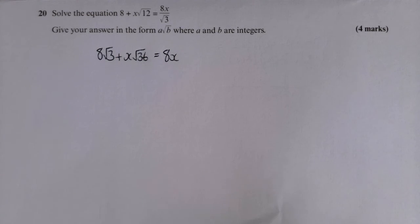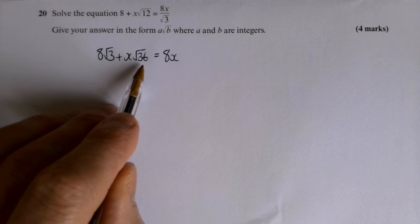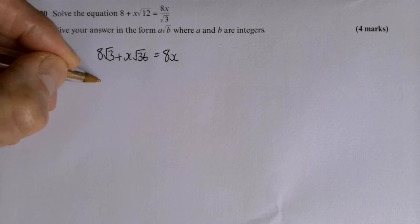So I haven't rationalised, that's a different process. Here I've just used my balancing techniques, my algebra equation techniques. I've multiplied everything by root three. And I'm left with the square root of 36. I know the square root of 36, it's 6.